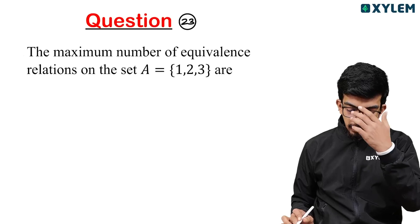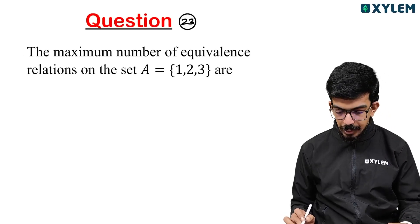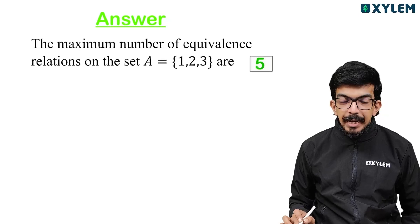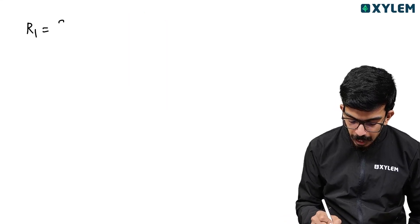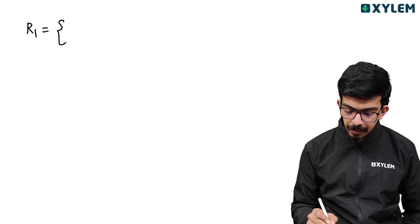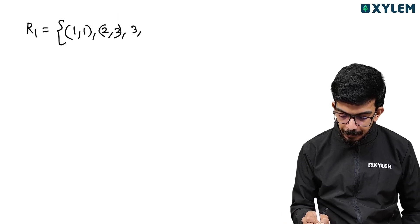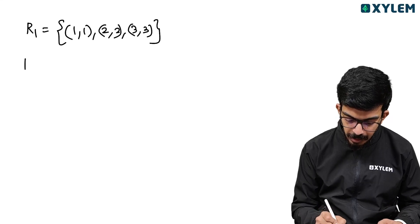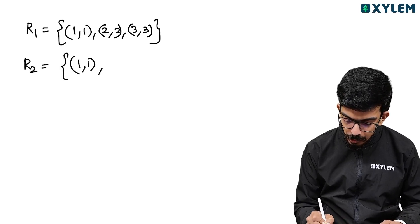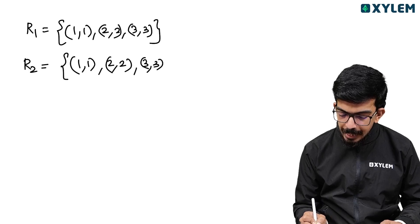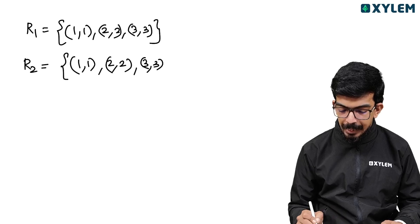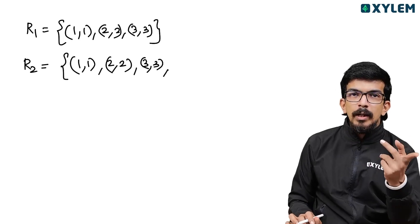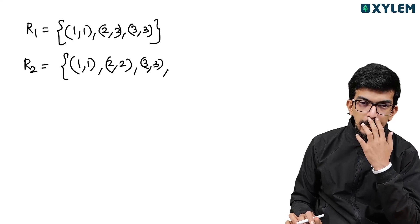Next, the maximum number of equivalence relations on the set {1, 2, 3}. An equivalence relation must be reflexive, symmetric, and transitive. R1 is the identity relation: {(1,1), (2,2), (3,3)} — that's an equivalence with 3 elements. R2 adds the pair (1,2) and (2,1): {(1,1),(2,2),(3,3),(1,2),(2,1)} — that's 5 elements, also an equivalence.